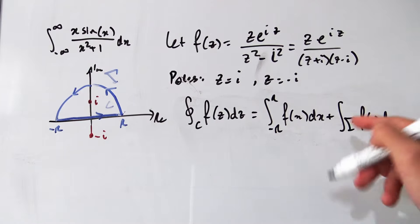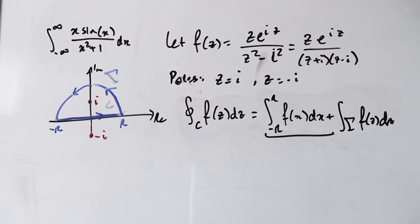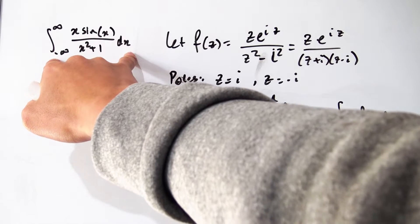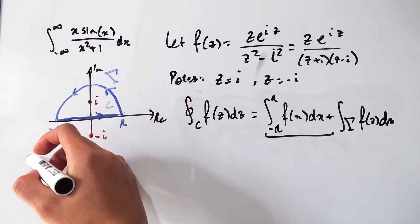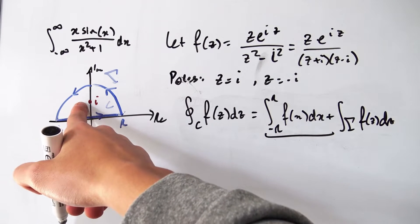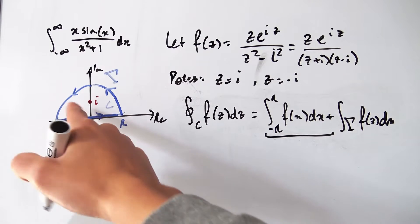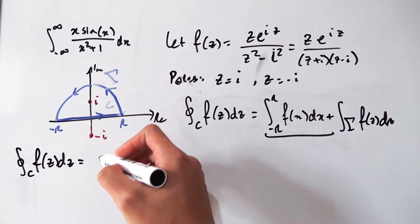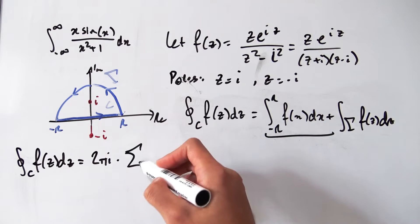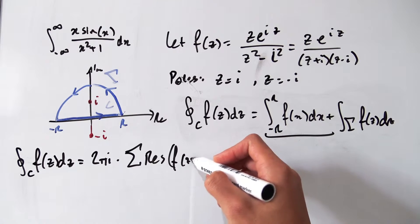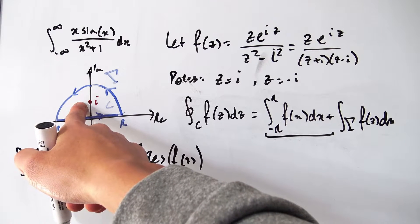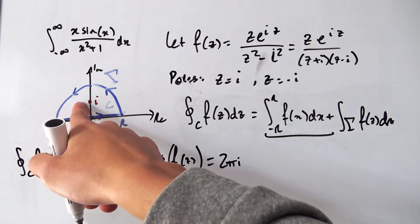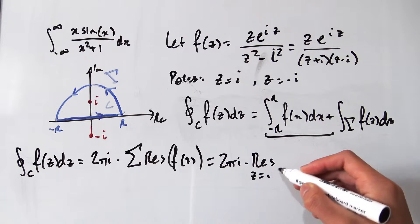We have three integrals to work with. The integral from −R to R is the one we're most interested in, since letting R approach infinity gives us our original integral. Using Cauchy's residue theorem, the contour integral over C equals 2πi times the sum of residues. We only have one pole inside the contour, so it's 2πi times the residue at z = i of f(z).